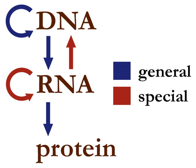Alternative splicing occurs when appropriate, increasing the diversity of the proteins that any single mRNA can produce. The product of the entire transcription process is a mature mRNA chain.